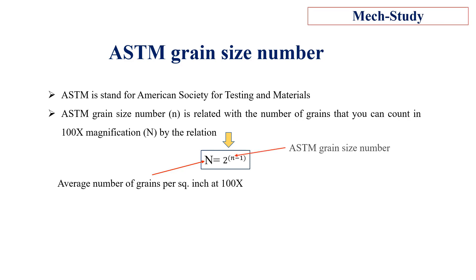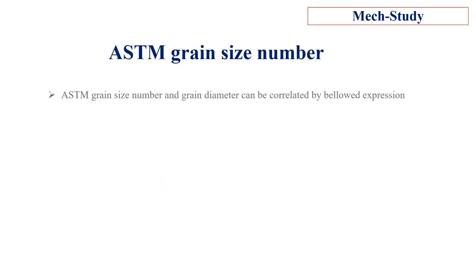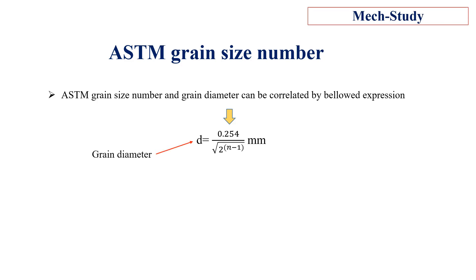Small n represents the ASTM grain size number. The ASTM grain size number and the grain diameter can be correlated by the expression shown below, where small d is the grain diameter and small n is the ASTM grain size number.